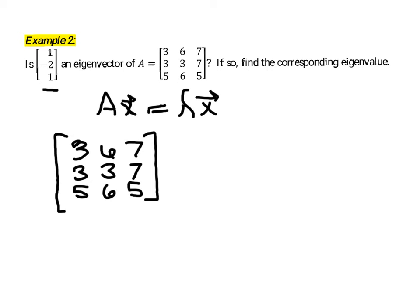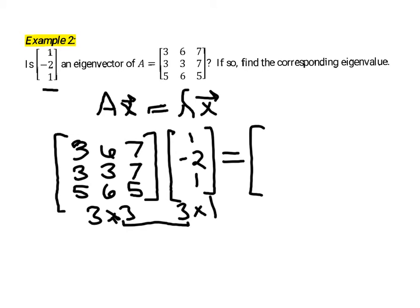So we should go ahead and multiply the matrix A times the vector that we were given, so 1, negative 2, 1. So performing that matrix multiplication, since this is a 3 by 3 matrix and we're multiplying it by a 3 by 1 vector here, our result—first these inner dimensions match, so we know that the multiplication will work, and the product will be a 3 by 1 vector. Just reviewing those concepts in matrix multiplication.